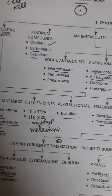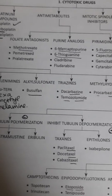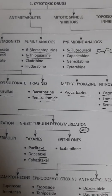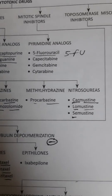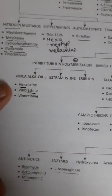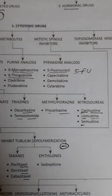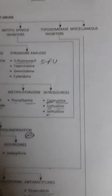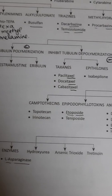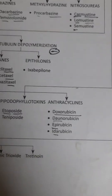Then we have antimetabolites: folate antagonist methotrexate; purine analogs 6-mercaptopurine and 6-thioguanine; pyrimidine analog 5-fluorouracil. Mitotic spindle inhibitors are vincristine, vinblastine, and paclitaxel. Then topoisomerase inhibitors: etoposide, doxorubicin, and daunorubicin.